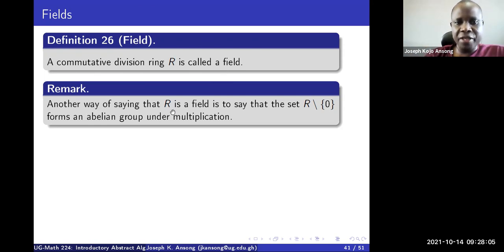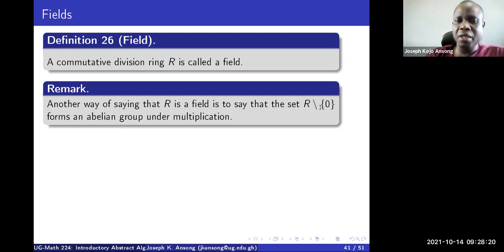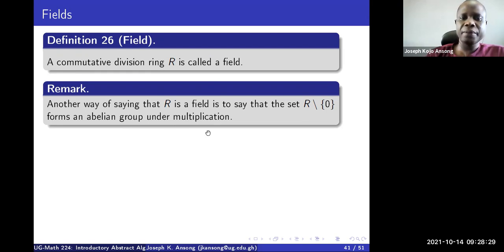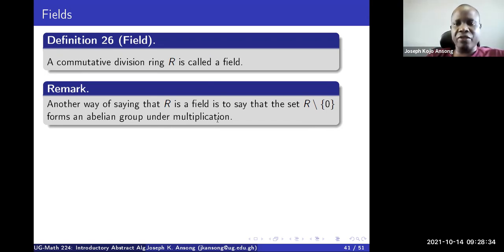Another way of saying that R is a field is to say that R without zero forms an abelian group under multiplication. A division ring means the set R without zero forms a group under multiplication. If it's a field, we want it to be commutative, so it has to be an abelian group under multiplication. So understand what a division ring is and understand what a field is — those are important.